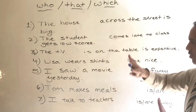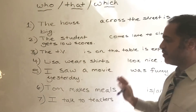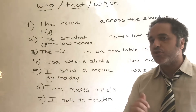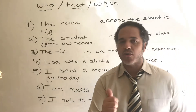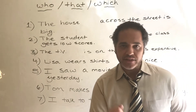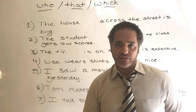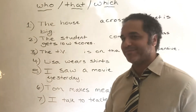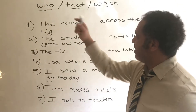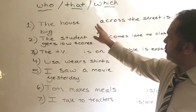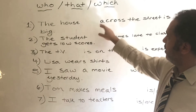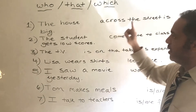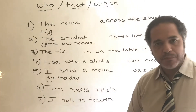If you can understand these sentences you should be very good to go with the basics of adjective clauses. So let's check it out. Number one: 'The house blank across the street is big.'